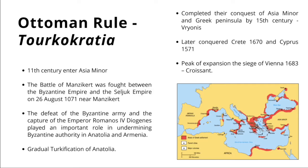When the revolution took place in 1821 and onwards, the Ottomans saw the Greeks as breaking away from the family. They did not see it as an independence movement, and that's why their reprisals were significant — including massacres and hangings of significant individuals and elites.